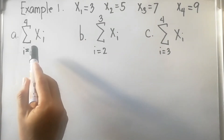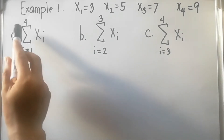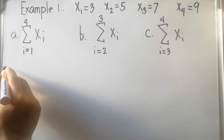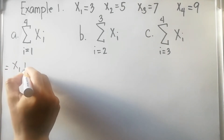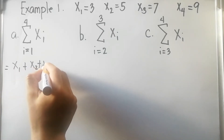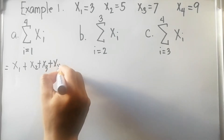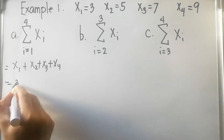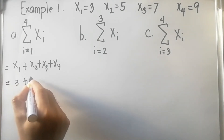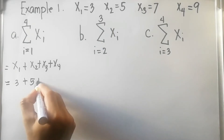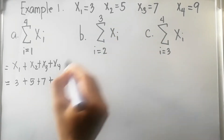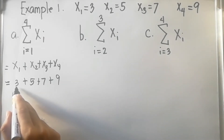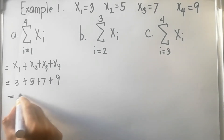For letter a, summation of x sub i where i equals 1 and n equals 4. We start at x sub 1, so that is equal to x sub 1 plus x sub 2 plus x sub 3 plus x sub 4. That is equal to 3 plus 5 plus 7 plus 9. So 3 plus 7 is 10, plus 5 is 15, plus 9, that is equal to 24.